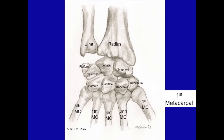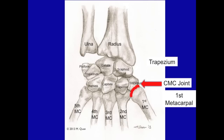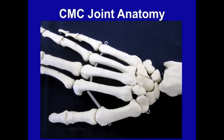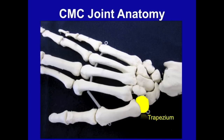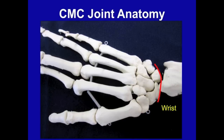Anatomically, the CMC joint is found at the articulation of the proximal metacarpal of the thumb and the trapezium of the wrist. On this hand model, from distal to proximal, the thumb joints consist of the interphalangeal (IP) joint, then the metacarpophalangeal (MCP) joint, and then the carpal metacarpal (CMC) joint at the articulation between the first metacarpal and the trapezium.